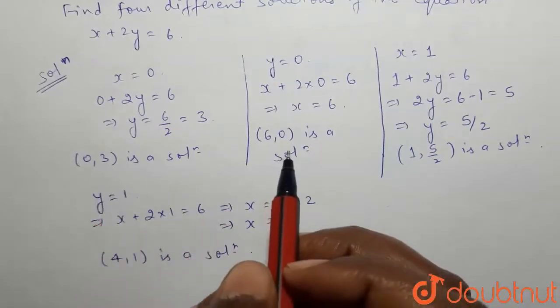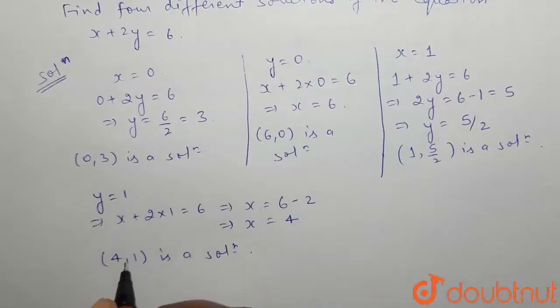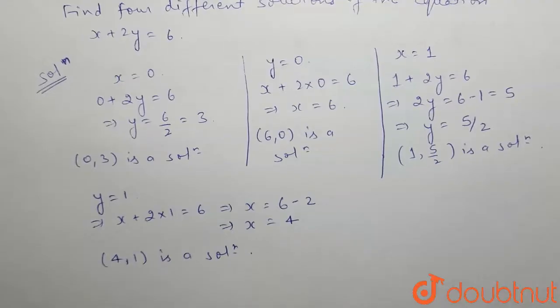(0, 3), (6, 0), (1, 5/2), and (4, 1) are the four different solutions of the given equation x plus 2y equals to 6. So this is the answer.